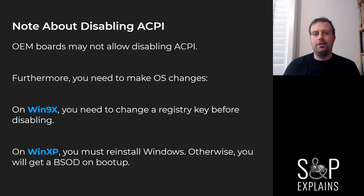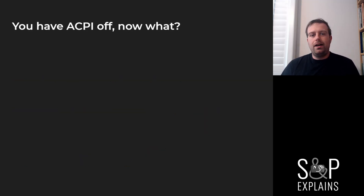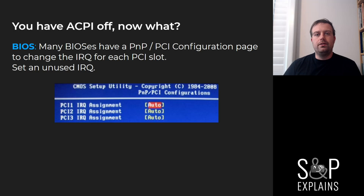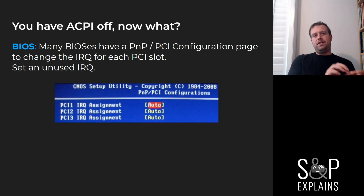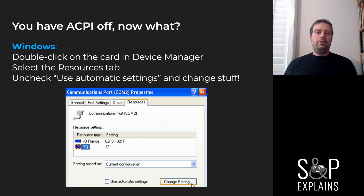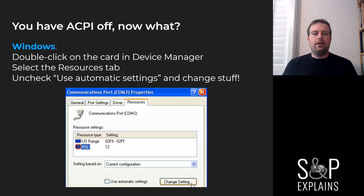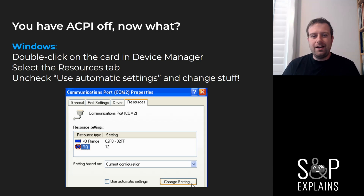Once you have ACPI off, you can often change the IRQs assigned to each PCI slot in the BIOS. You can set an unused IRQ — you might have to play with this because you might not know which one is PCI 1, PCI 2, or PCI 3. Often the AGP card is PCI 1. You can also do this in Windows, and it'll affect things when you're running Windows. Do this by double-clicking on the card in Device Manager, select the Resources tab, and uncheck the Use Automatic Settings button — scary, but then it'll let you change the IRQ settings.